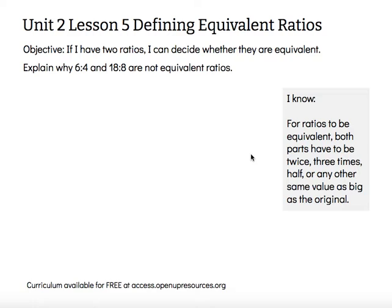So if I make both parts 10 times as big, then those are equivalent. If I make both parts 10 times as small, then those are still equivalent to the original ratio.